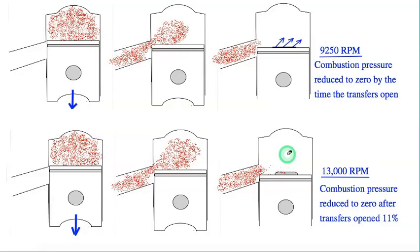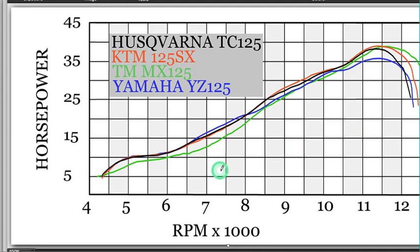I don't know if it's obvious or not, but as long as there's more than 5 psi in the cylinder, that transfer is not going to happen. So the more overlap you have there, the more delayed the transfer is, and that's one reason for the quick downturn of power at the highest RPM. So looking at a dyno chart here of the horsepower of these four 125cc motocrossers, you can see how sharply the power drops off after the peak.